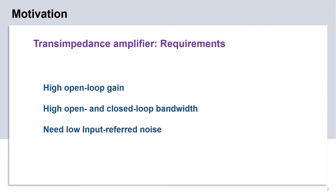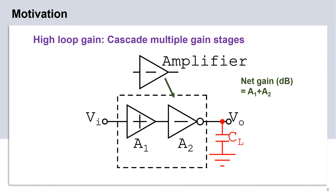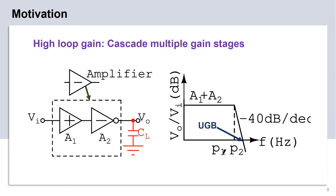Thus, from our trans-impedance amplifier, we require high open-loop gain, high open and closed-loop bandwidth, and low input-referred noise. A general approach to increasing the gain of an amplifier is to realize it as a cascade of multiple smaller gain stages as shown. But cascading multiple gain stages introduces potential instability in negative feedback.